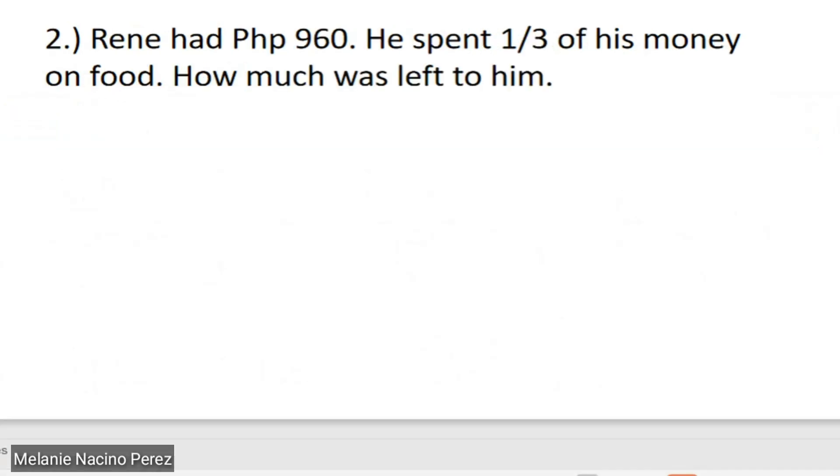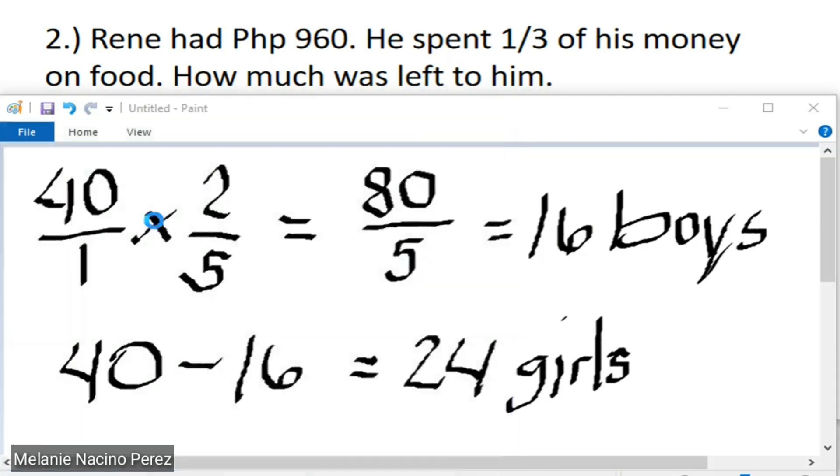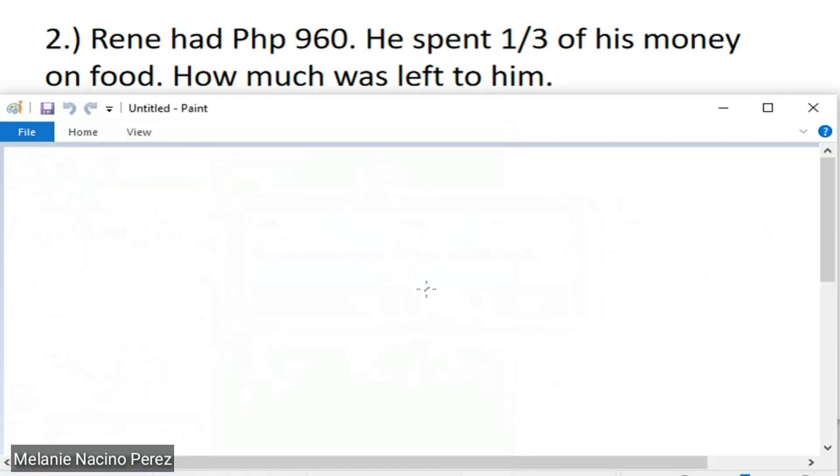Next problem. We have Rene who had 960 pesos. In order to solve this problem, we need to find out how much was spent by Rene. So, 960 over 1, multiply by 1 third.